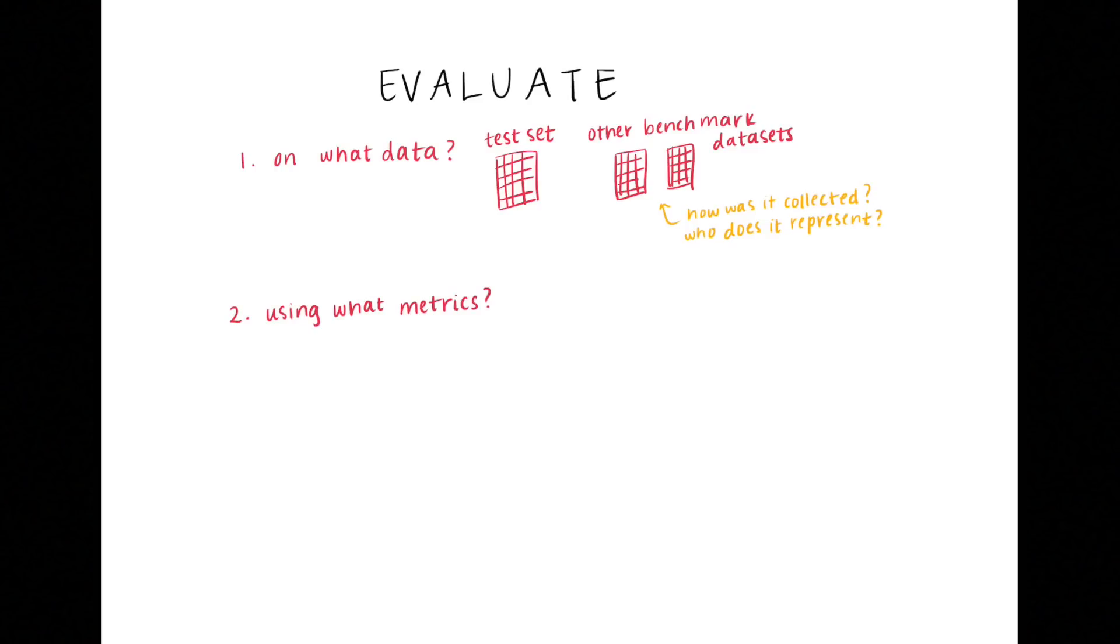Once the model is trained, we can report its final performance on the test data, and we might choose to report its performance on other public datasets, which are called benchmark datasets. Using benchmark datasets makes it easier to compare your model to others, but it's important to keep in mind all the same questions and concerns about data collection that we talked about earlier for benchmark datasets. We also have to choose what performance metrics to use. In an earlier video, we introduced false positive and false negative rates, which are a few among many possible metrics, all of which have different implications and advantages, and affect how the model will be used.